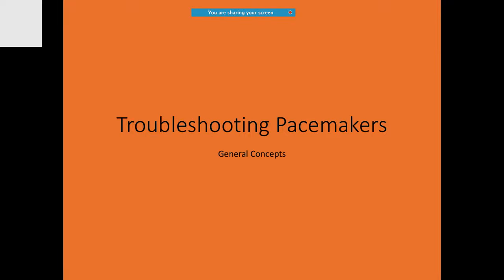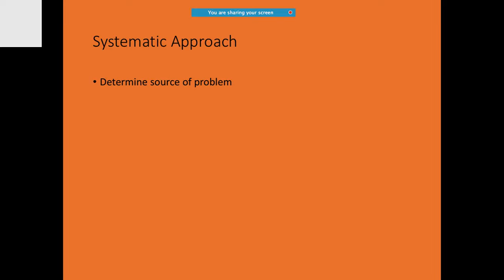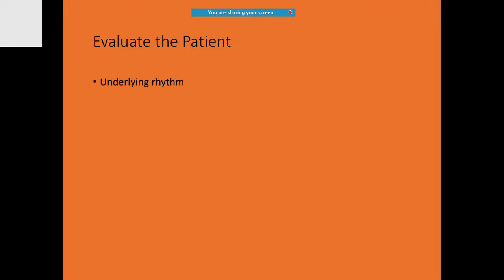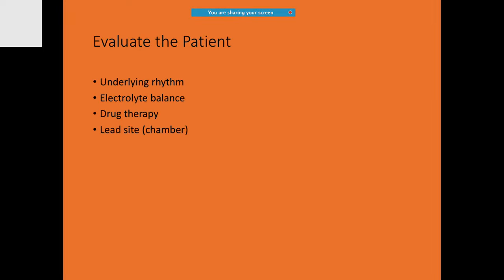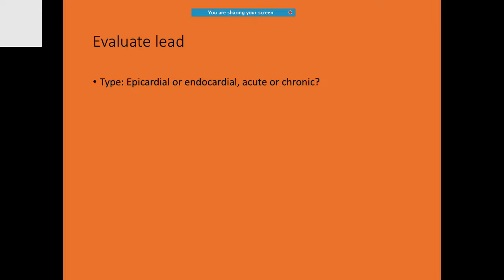For troubleshooting, the systematic approach is to determine the source of the problem: the patient, the lead, or the pacemaker. Never forget to consider the patient — underlying rhythm, electrolyte imbalance, drug therapy, or acid-base status. Also evaluate the lead site — is it in the atrium or ventricle, epicardial or endocardial, acute or chronic, and is it properly connected?